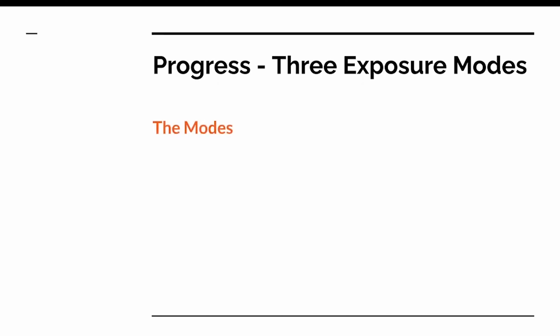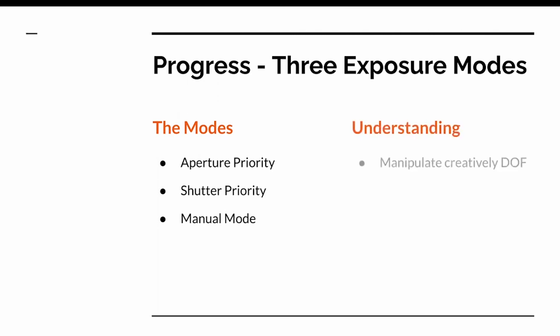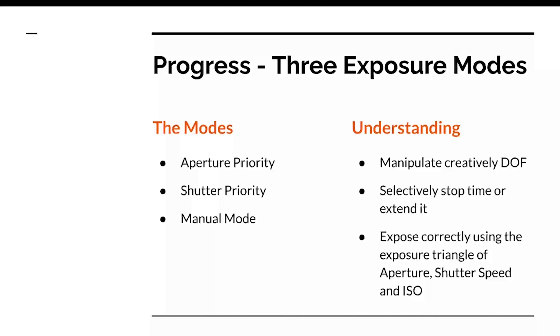The meter in these modes determines the final settings. You're choosing your aperture, but the meter balances the ISO and shutter speed to get the correct exposure — so understanding the meter is essential. We've looked at aperture priority and shutter priority; we'll eventually progress to manual mode to look at the complete exposure triangle. Aperture priority manipulates your depth of field; shutter priority lets you selectively stop or extend time; and in manual mode you're in complete control.